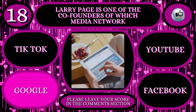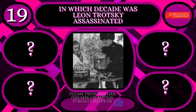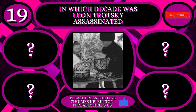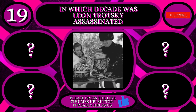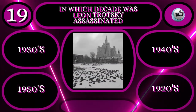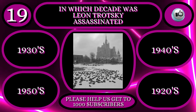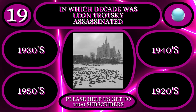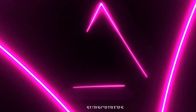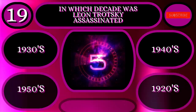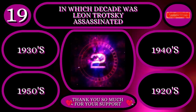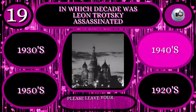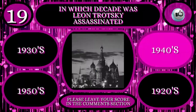Question 19: In which decade was Leon Trotsky assassinated? Was he assassinated in the 1930s, 1950s, 1940s, or the 1920s? 5, 4, 3, 2, 1 — He was assassinated in Mexico City in 1940, so the answer is the 1940s.